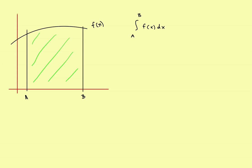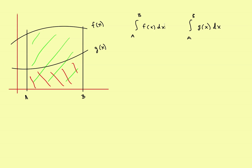Now suppose you had a second function g of x, and you wanted the area under g of x — that would be this red area. So the integral from a to b of g of x dx gives you that red area. We'll call f of x the top function and g of x the bottom function.